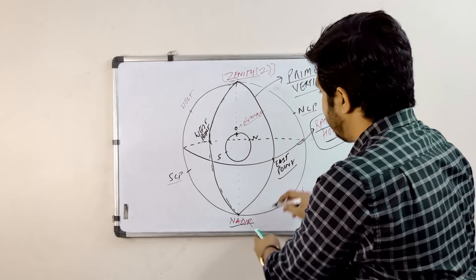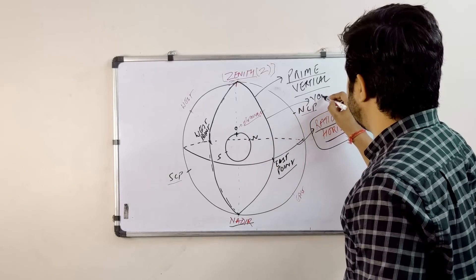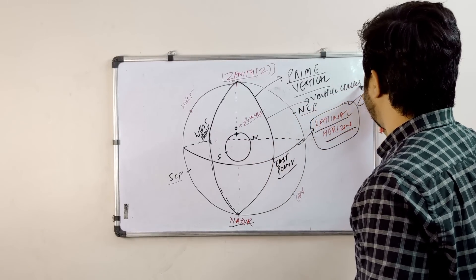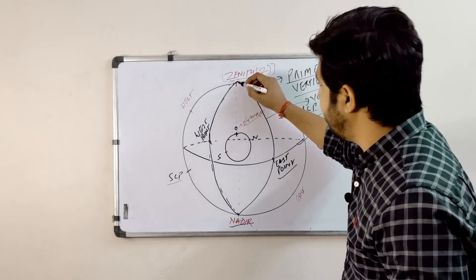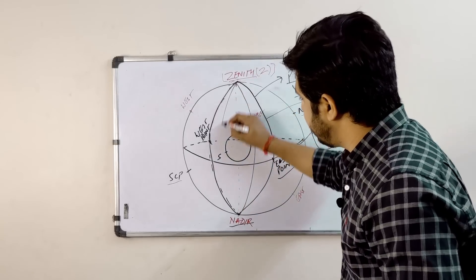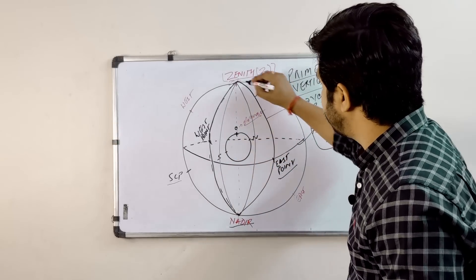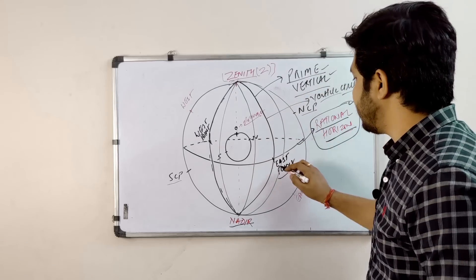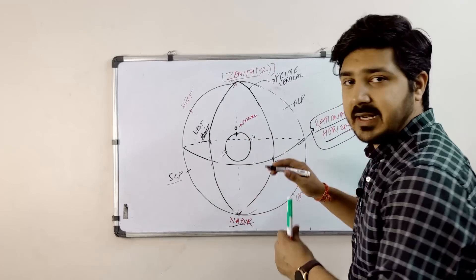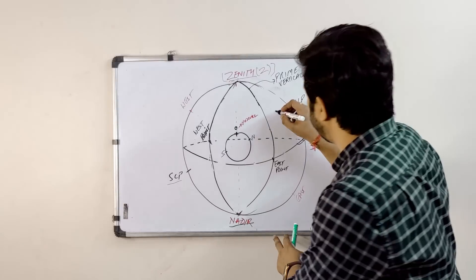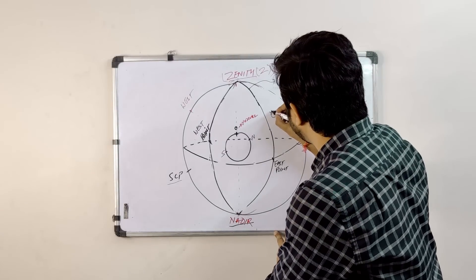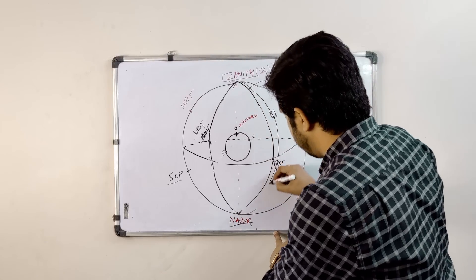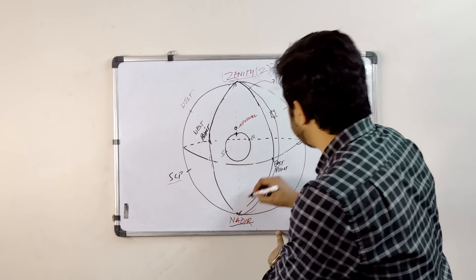These circles are known as vertical circles — any of them can be a vertical circle — but only the prime vertical passes through the east point and the west point. Let's assume a body here, say the sun, and this is the vertical circle passing through the sun.